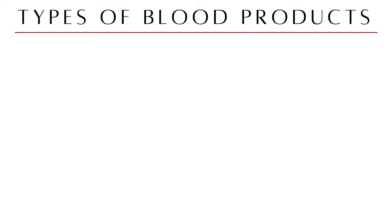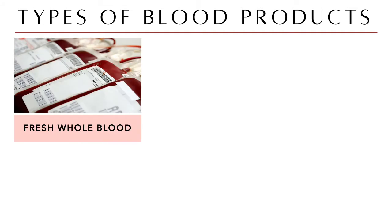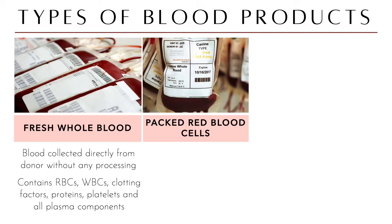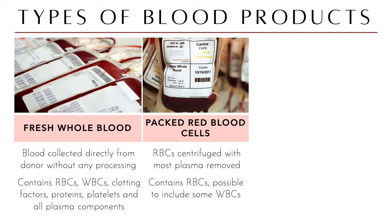There are three types of blood products — the most common types used in the clinical setting, specifically for small animals. First, you have fresh whole blood: blood collected directly from a donor without any processing done, so it contains everything you expect — RBCs, WBCs, clotting factors, proteins, platelets, and all plasma components.